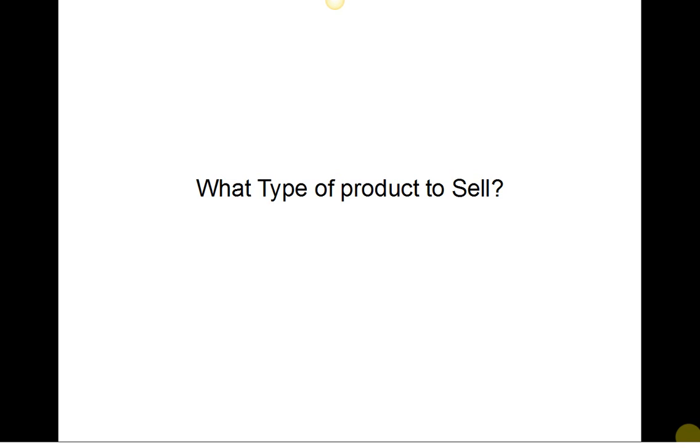In the last video we spoke about the different types of products and services you can put together. We looked at information products such as videos, ebooks, interviews, and we also spoke about software, WordPress themes and plugins, templates, graphics, audio files and videos that you could sell on the Warrior Forum. All these things would make great products and are very popular.